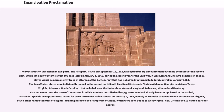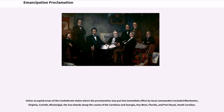Specific exemptions were stated for areas also under Union control on January 1, 1863, namely 48 counties that would soon become West Virginia, seven other named counties of Virginia including Berkeley and Hampshire counties, and New Orleans and 13 named parishes nearby. Union-occupied areas of the Confederate states where the proclamation was put into immediate effect by local commanders included Winchester, Virginia; Corinth, Mississippi; the Sea Islands along the coasts of the Carolinas and Georgia; Key West, Florida; and Port Royal, South Carolina.